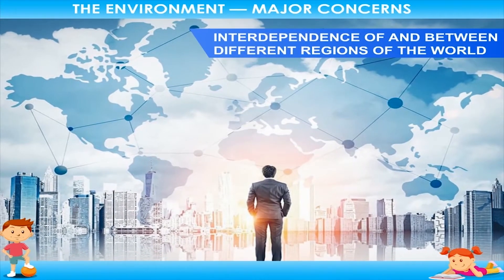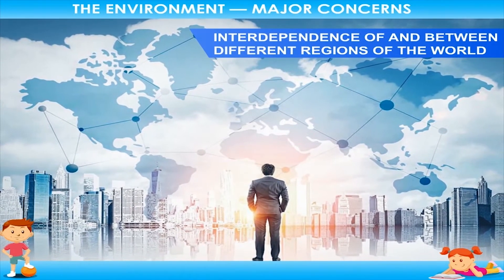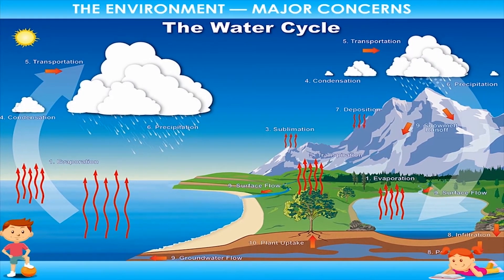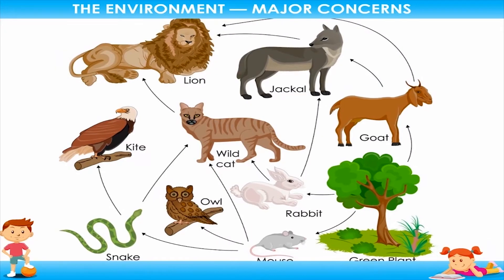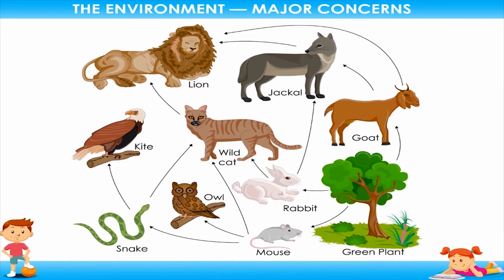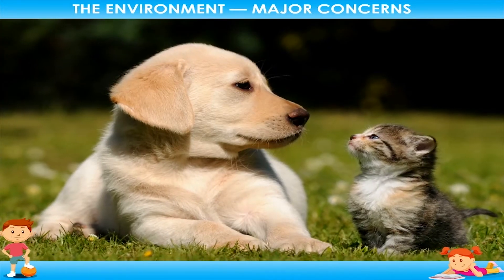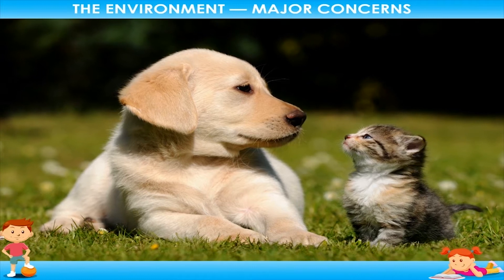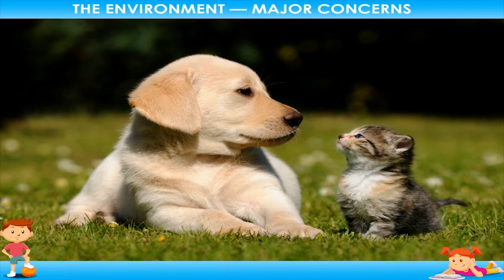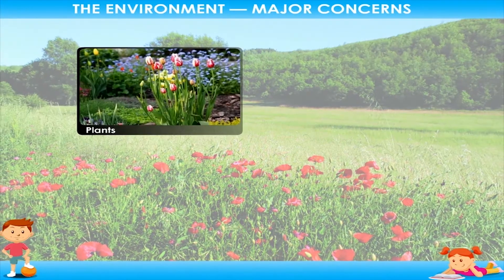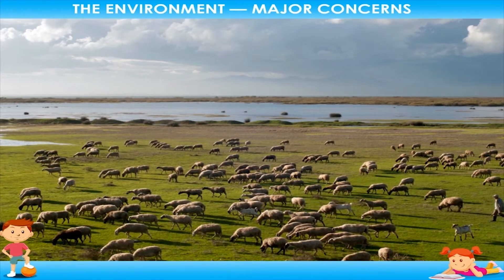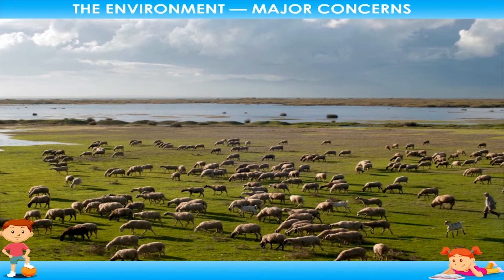Interdependence of and between different regions of the world: The things present in the environment are connected to each other and depend on each other for their benefit. This is defined as interdependence, a mutual understanding where both partners benefit from each other. What is the relation of plants, animals, and microorganisms with each other and the non-living things that surround them? Let us study in detail.